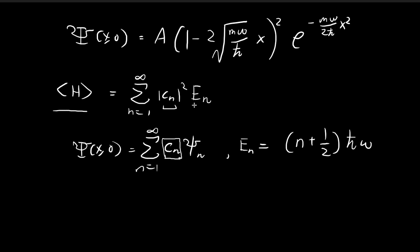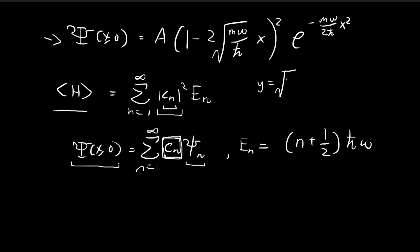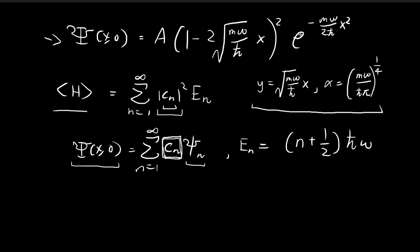To find the expected value of the energy levels we need to find cₙ — specifically, the cₙ that allows us to reconstruct the initial wave function using the stationary states. Before doing that, I'll express the initial wave function in a slightly different form. I'll define y = √(mω/ℏ) · x and define α = (mω/ℏπ)^(1/4). These substitutions will simplify the expressions.